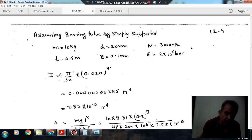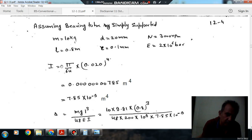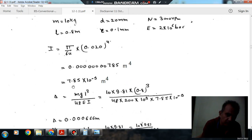First, we will find the deflection of the shaft due to this rotor. For this, we need moment of inertia of the shaft: I = π/64 × D^4. Converting D into meters, we can find the moment of inertia, that is 7.85×10^-9 m^4.